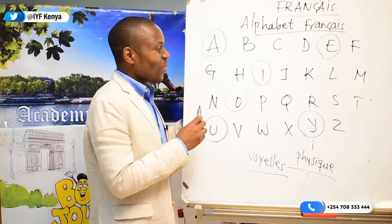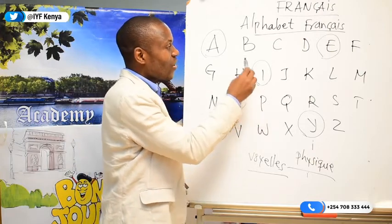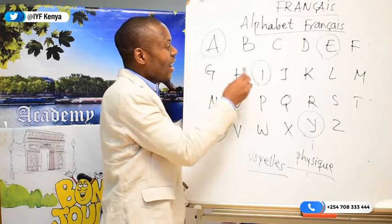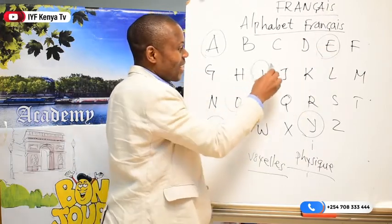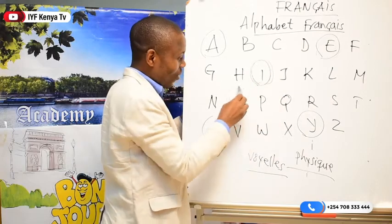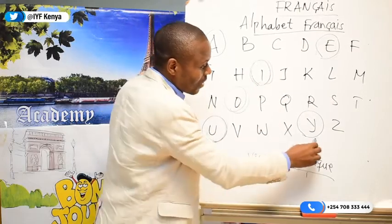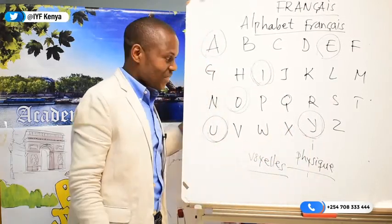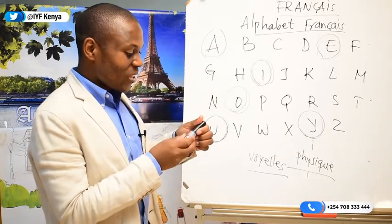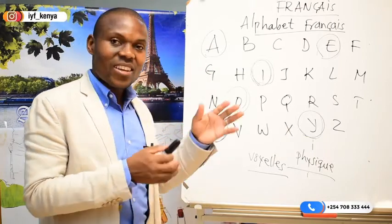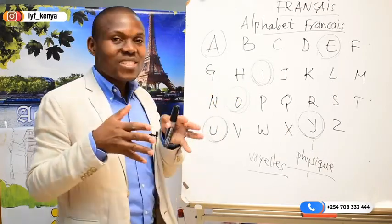These are the voyelles we have: A, E, I, O, U, Y — there are six. That's what we covered in the second lesson.